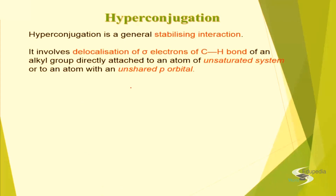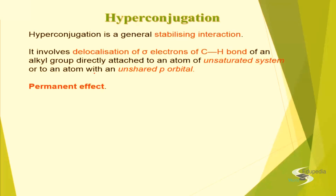Next is hyperconjugation. Hyperconjugation is generally a stabilizing interaction and it is a permanent effect. It involves delocalization of the sigma electrons of the C-H bond in an alkyl group directly attached to an atom of an unsaturated system — that is, the double bond between carbon and carbon, or to an atom which has an unshared p electron.